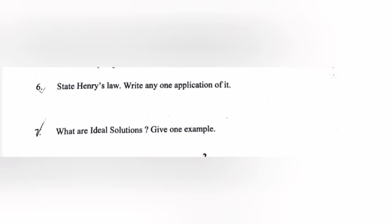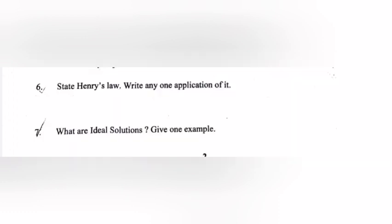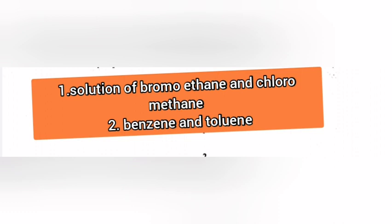Question 7: What are ideal solutions? Give one example. Answer: The solutions which obey Raoult's law are called ideal solutions. Example: Solution of bromoethane and chloroethane, benzene and toluene.